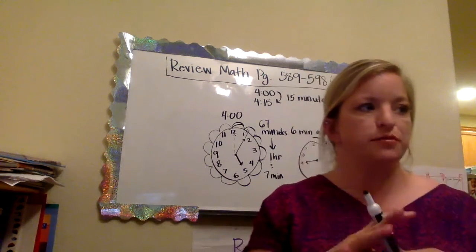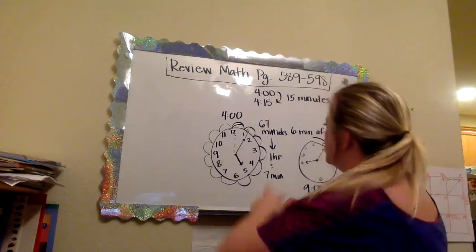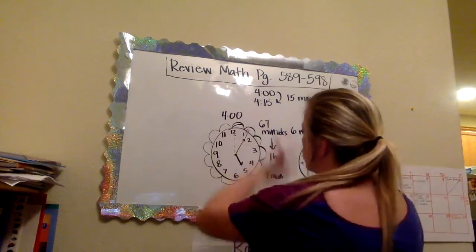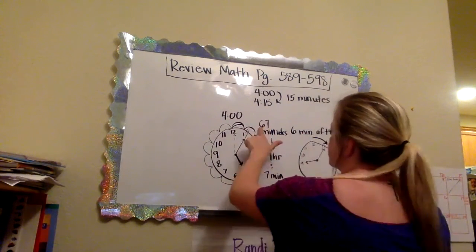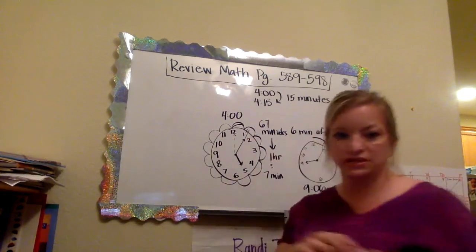Okay, so when you do elapsed time, you're going to count in groups of five as you go along the clock. Not all of them will do that. That one passed over an hour. You know, there's 60 minutes in an hour, so you can pull that out. And then there's seven minutes left.